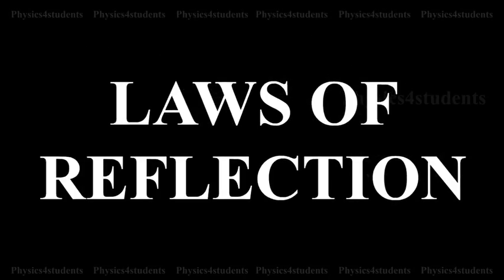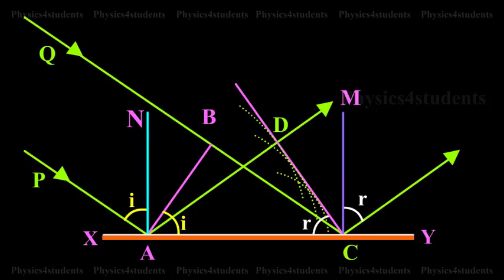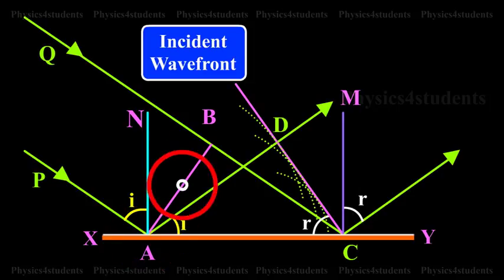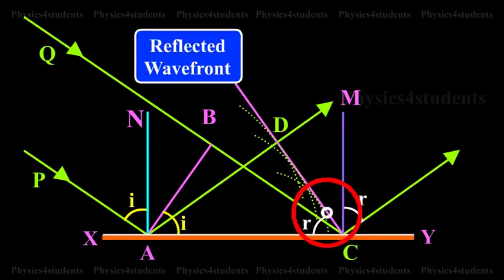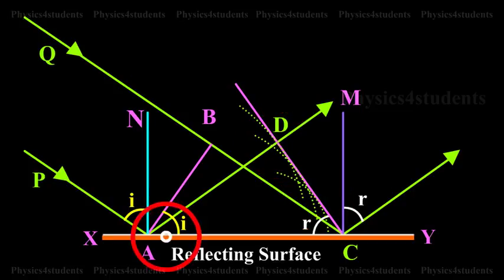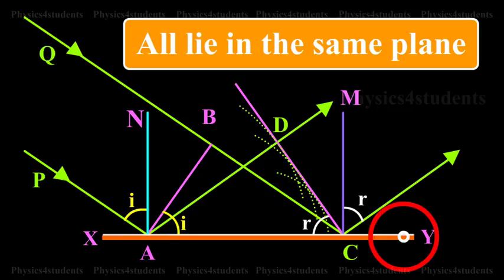Laws of Reflection. The incident wavefront AB, the reflected wavefront CD, and the reflecting surface XY all lie in the same plane.